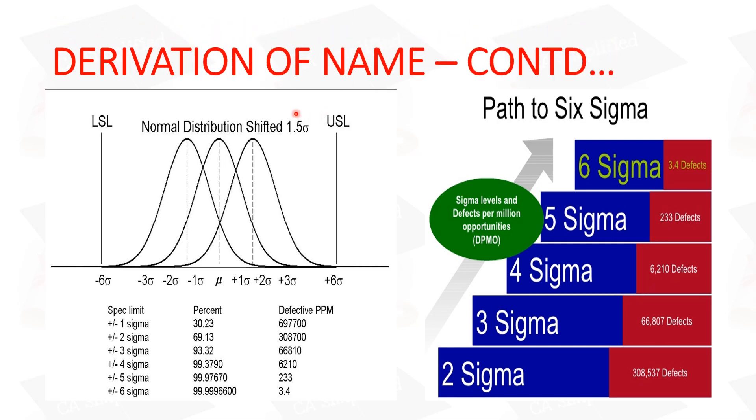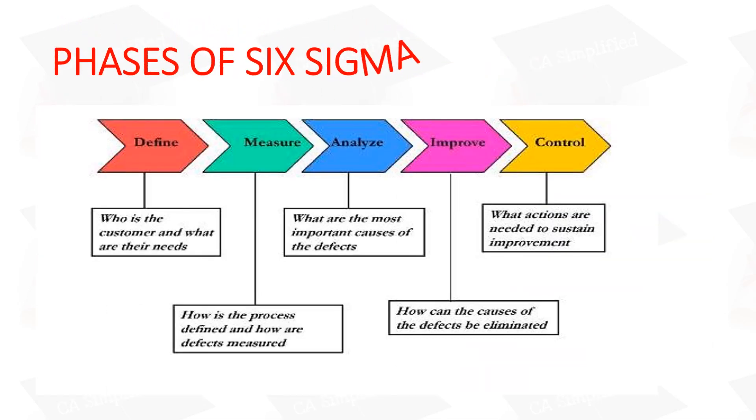Now you can see here in this percentage, different companies are operating at different sigma levels. All these defects are per million, meaning we are talking about 10 lakhs. Now, Six Sigma has 5 phases called DMAIC, which means Define, Measure, Analyze, Improve, and Control.